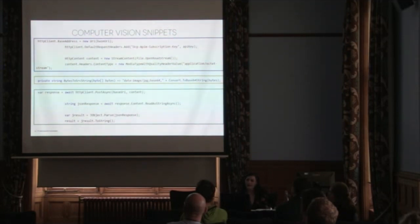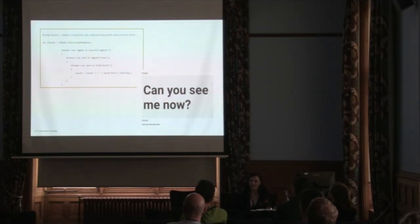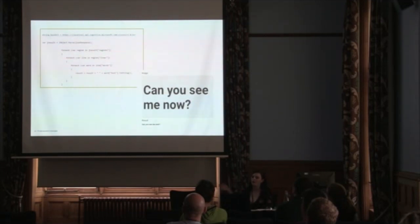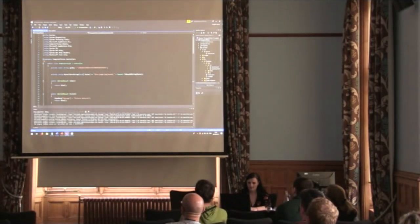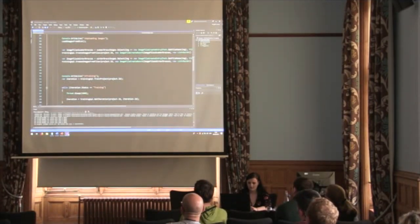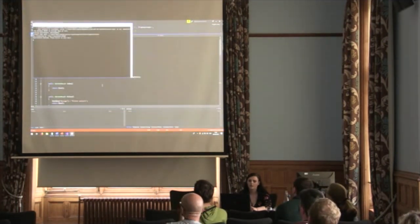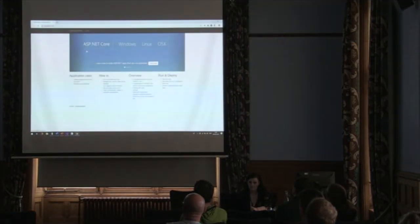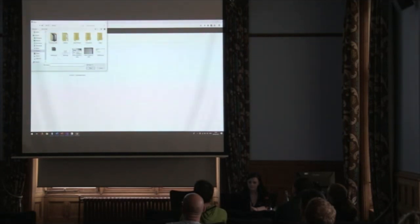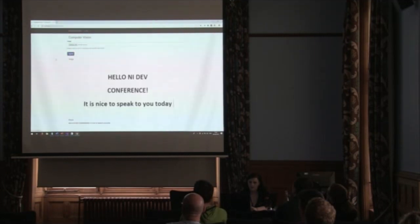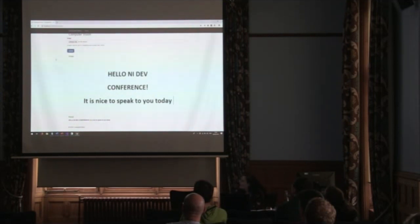We can get our JSON response back, and we don't have to do this for everyday objects — we can also do this for text. Here I ran a piece of text through by manipulating the base URI to change to a different endpoint. Then for each region where it finds text, it picks out the text and prints it in a line. We can see it came back with 'Hello' and 'I dev, it is nice to speak to you today.'